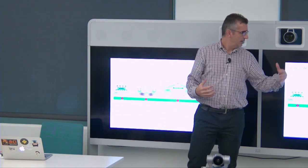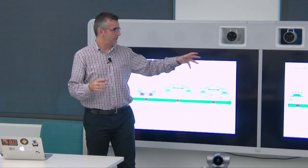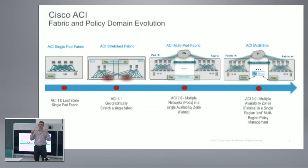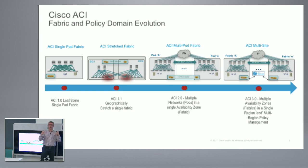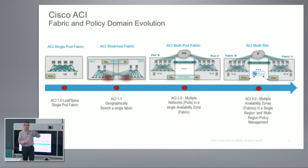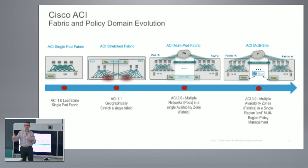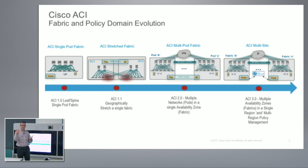That's where ACI Multisite comes into the picture. ACI Multisite is the latest architecture available from 3.0. It looks similar at a high level to Multipod, but the striking difference is that Multisite interconnects different fabrics — it doesn't interconnect pods. It interconnects APIC domains. Each site, each fabric is an independent APIC domain, which means I can apply a policy in one site but not in another. I have independent network fault domains and also independent tenant change domains. That's why we define each of these fabrics as an availability zone — full fault domain isolation and tenant change domain isolation.